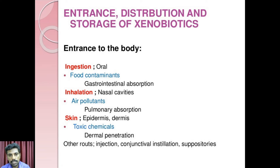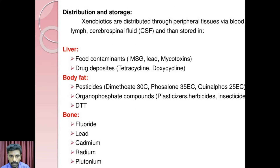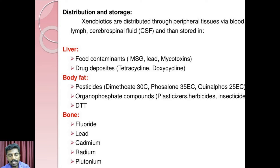And also, some other routes can be helpful to introduce the toxicants into the body, including injection, conjunctival instillation, and suppositories. Food contaminants are also absorbed by the gastrointestinal tract, air pollutants are inhaled through nasal cavities, and toxic chemicals mainly penetrate through the skin and dermal layers.